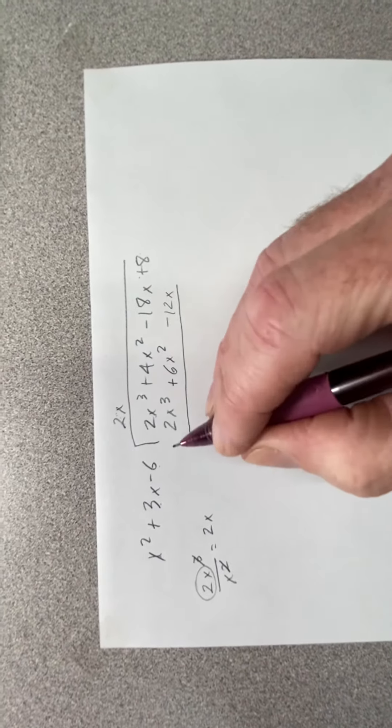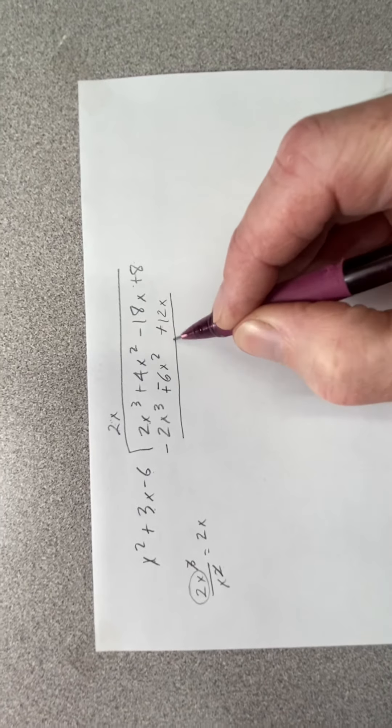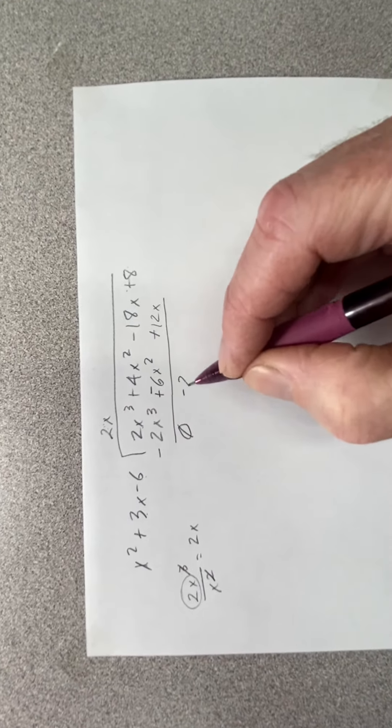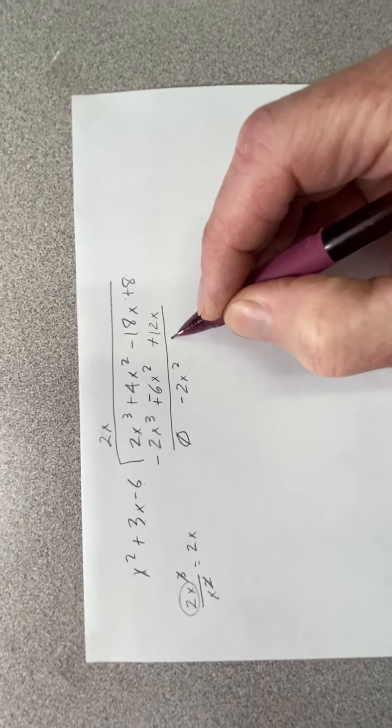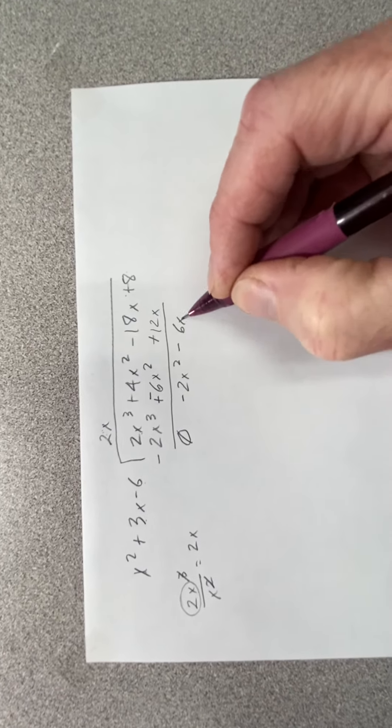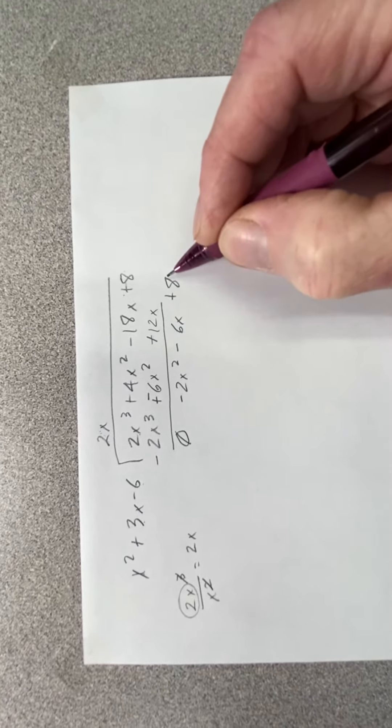Draw my line, I change all of my signs. Gives me 0 here, gives me negative 2x squared, and it gives me negative 6x. I go ahead and bring down the plus 8.